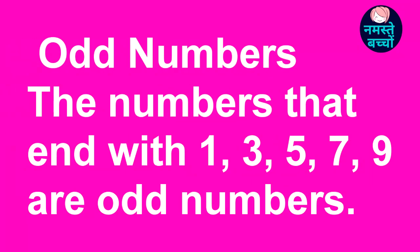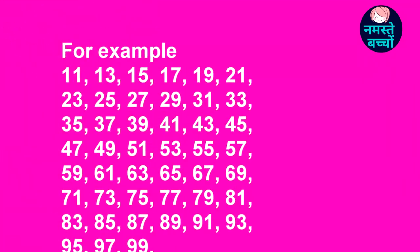Now, what are odd numbers? The numbers that end with 1, 3, 5, 7 and 9 are odd numbers. For example,